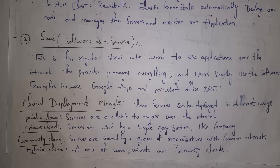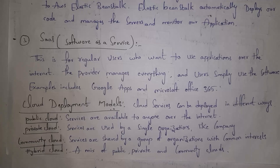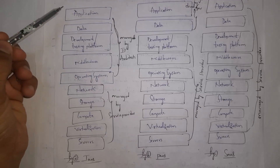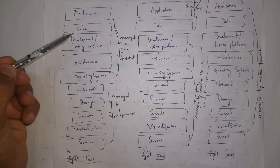The third one is community cloud, where services are shared by a group of organizations with a common interest. For example, a state government contains various departments that all follow government rules, share the common goal of keeping data secure, and handle sensitive data. The fourth one is hybrid cloud, which is a combination of public, private, and community cloud. Based on requirement, companies can store data in any of them — for instance, storing non-sensitive data in public cloud and sensitive project data in private cloud.